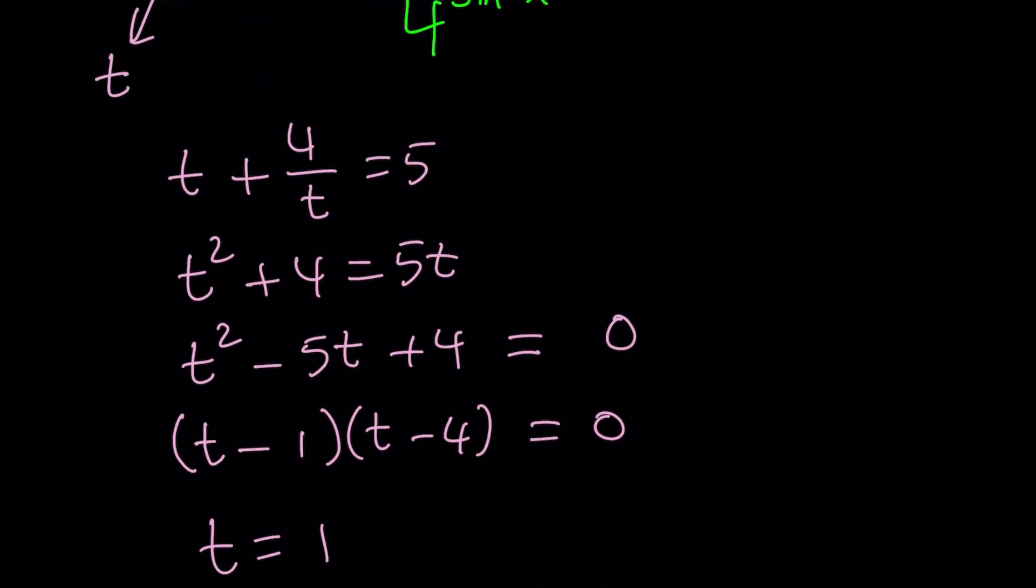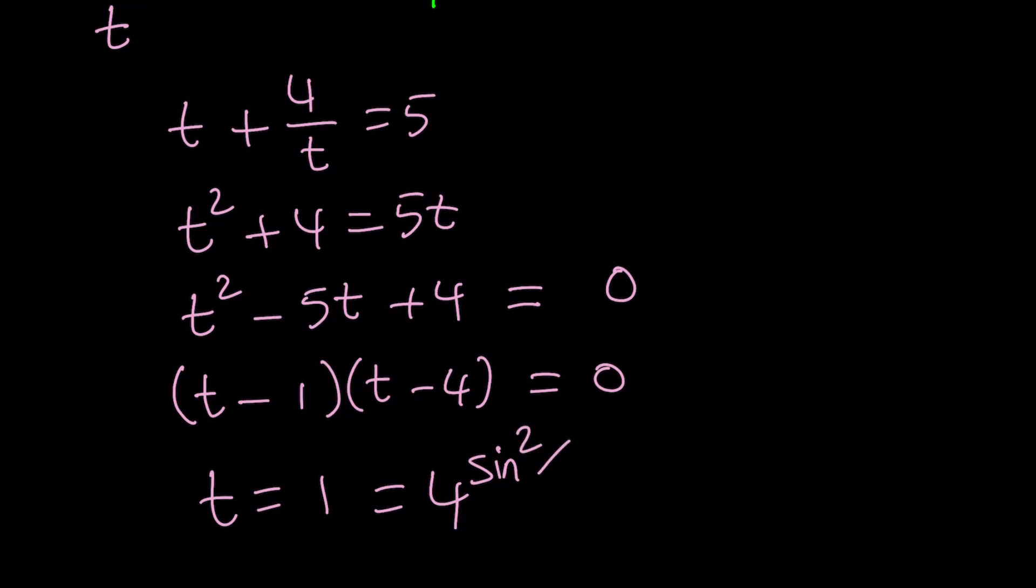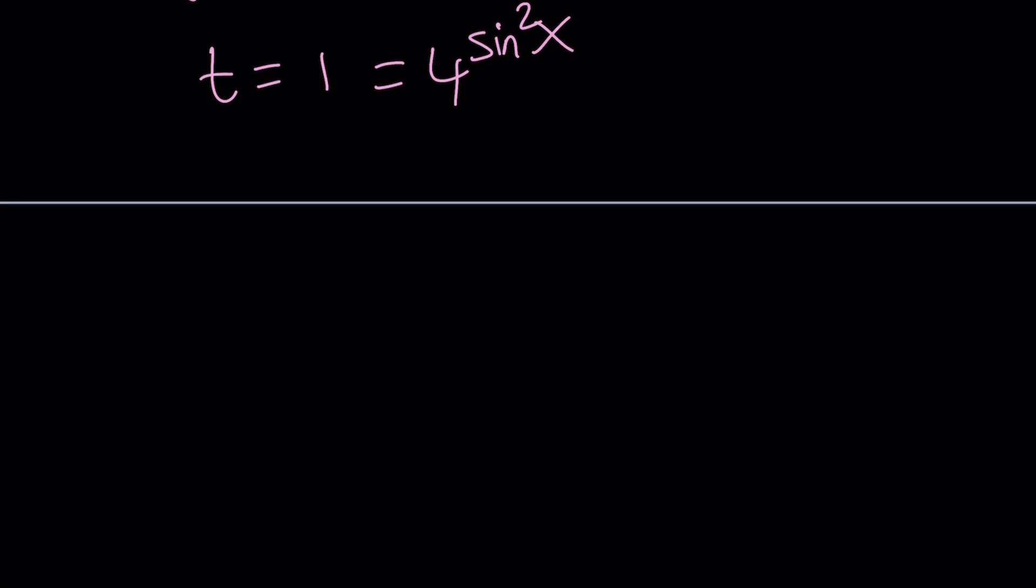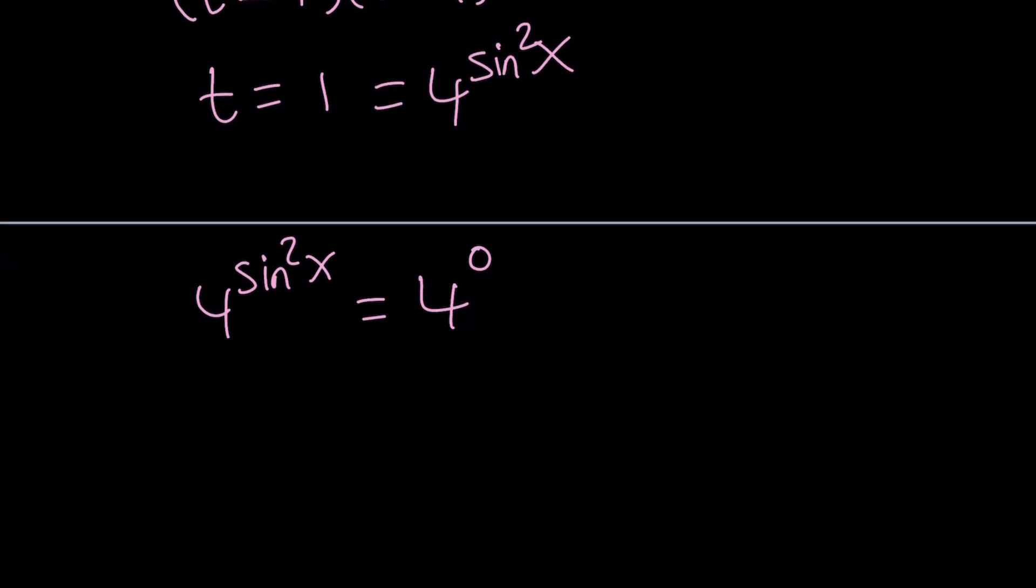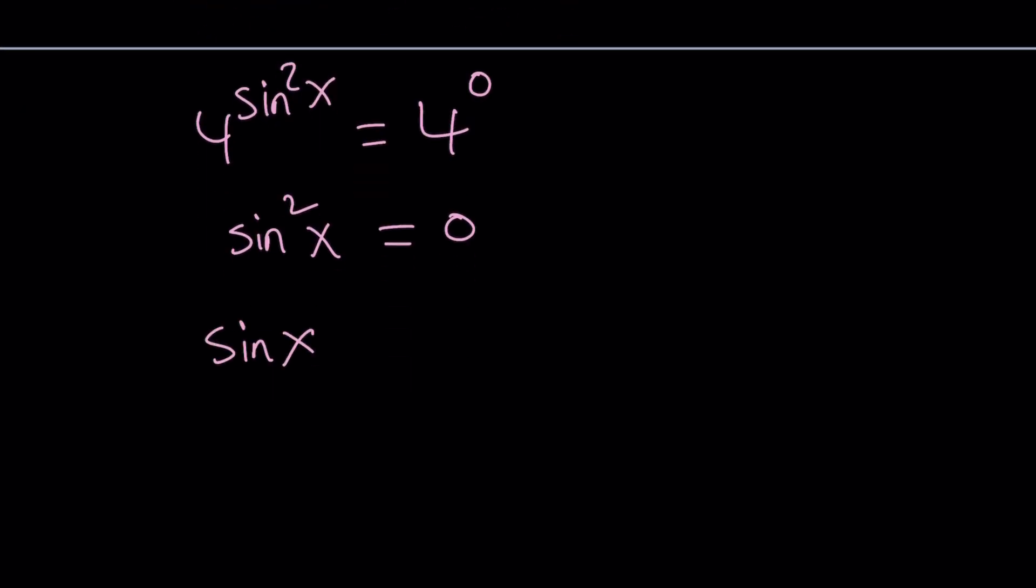So if t is equal to 1, t is 4 to the power sine squared x. Let's go ahead and deal with this value first, and then we'll take care of t equals 4 later. Now, how can I interpret this? 4 to the power of something equals 1. Obviously, the obvious way to do it is write the 1 as 4 to the power of 0, because any non-zero number to the power of 0 equals 1. So what do we do with this? We have the bases that are equal, so naturally we should say sine squared equals 0. And from here, only one thing follows, because there's only one number whose square equals 0, and that is 0. If sine x is equal to 0, think about it. Where is sine 0?